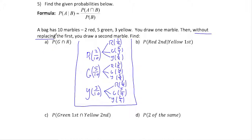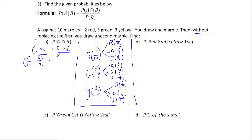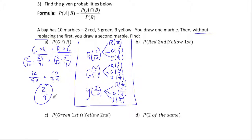For letter A, the probability of green and red — since it doesn't specify order — that's the probability of green then red plus the probability of red then green. So that's (5/10 × 2/9) plus (2/10 × 5/9), which gives 10/90 plus 10/90, equaling 20/90, or a probability of 2/9.